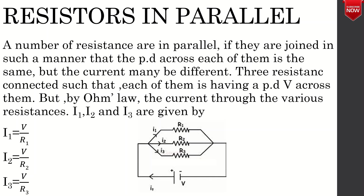For resistors in parallel, I1 = V/R1, I2 = V/R2, and I3 = V/R3. These three resistors R1, R2, R3 are connected in parallel, so the potential difference across each is the same but the current through each is different.